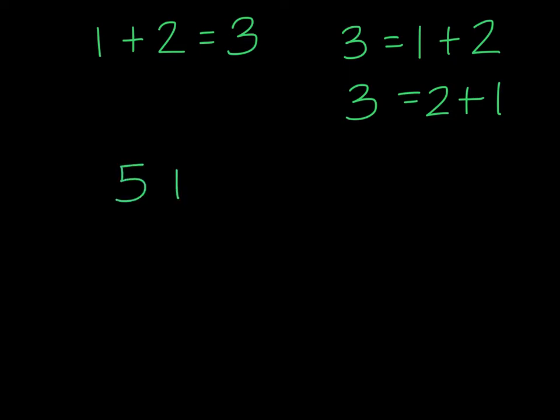Similarly, if we write 5 plus x equals 12, we will go about solving in the same way because 5 is being added to x here. So the inverse of adding 5 will be to subtract 5 from both sides neatly.